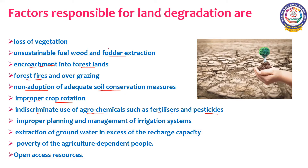Improper planning and management of the irrigation system is another factor, as farmers are not aware of soil conservation measures and irrigation systems. Extraction of groundwater in excess of the recharge capacity — indiscriminate extraction of underground water more than the recharge capacity — also leads to land degradation. Poverty is again a reason, and open access resources, which refer to resources over which government authorities do not have direct control, are the last factor.